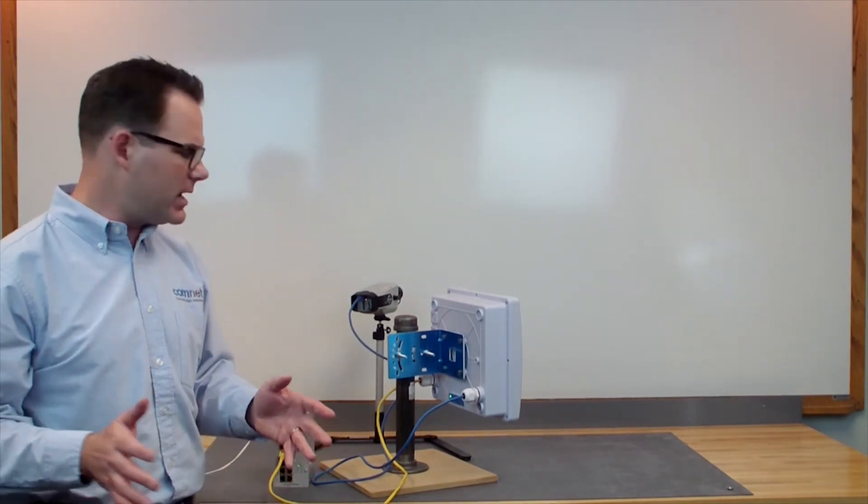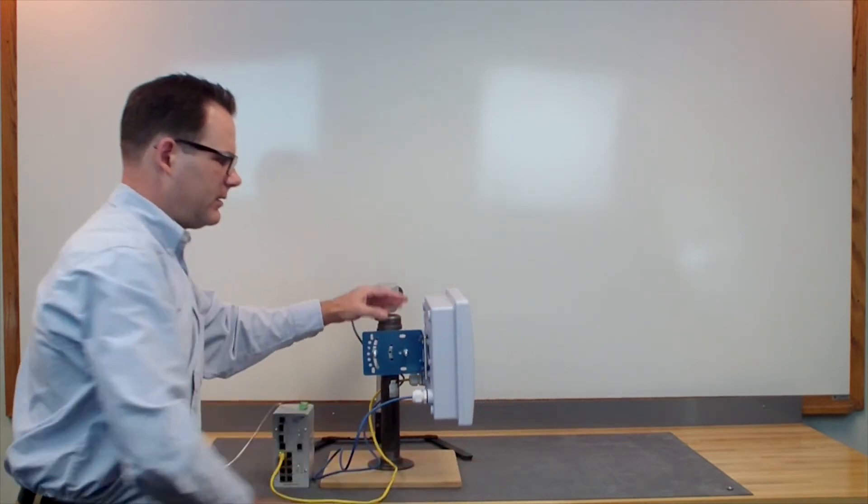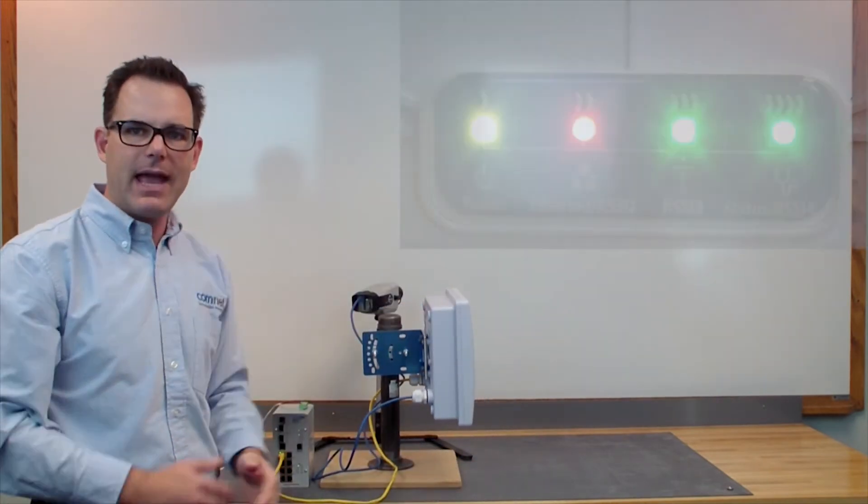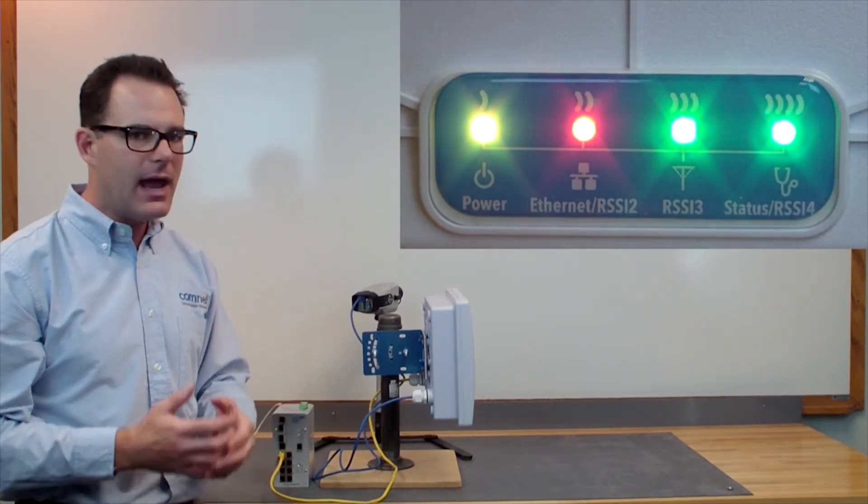Really our last thing to do here is point that client radio at the AP until we get enough green LED status lights for strength and then we're good to go.